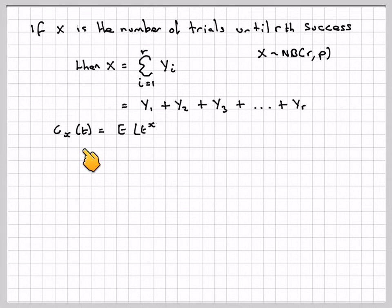So G_X(t) is the same as finding the expectation of t to the X. So that will be E of t to the Y_1 plus Y_2 plus Y_3 plus Y_r, because we want the number of trials until the rth success.